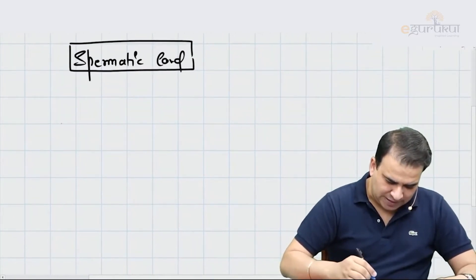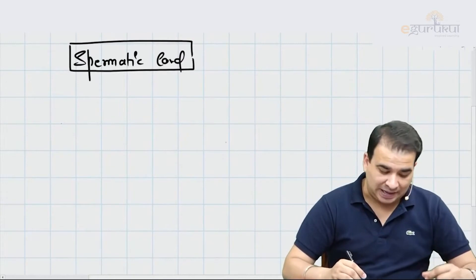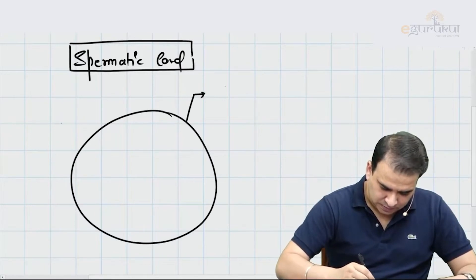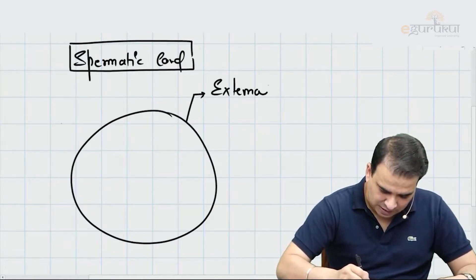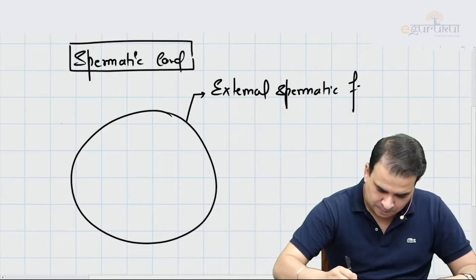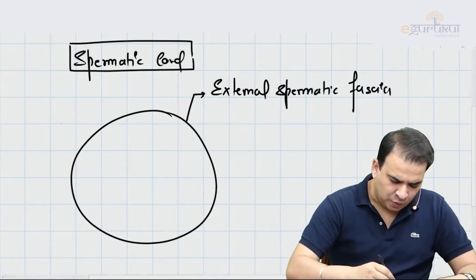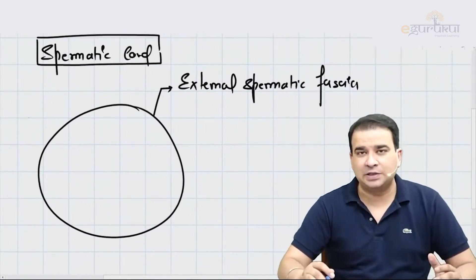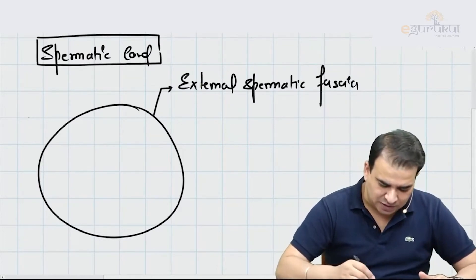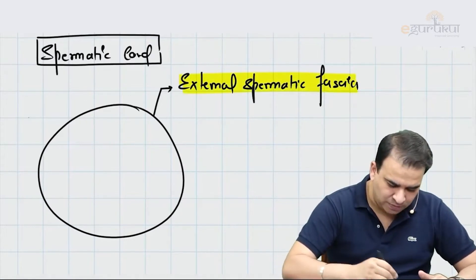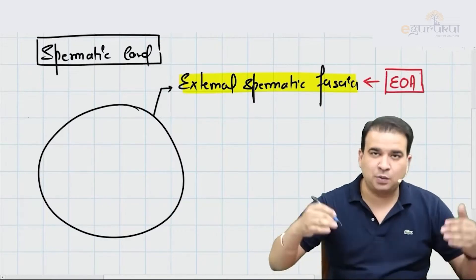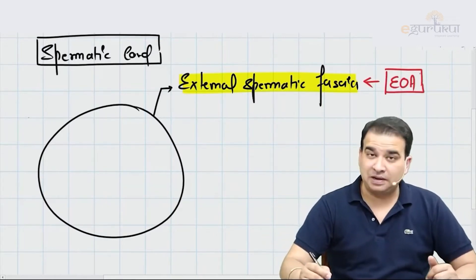Starting from outside to inside, the outermost layer is called the external spermatic fascia. What is important to know in the spermatic cord — and even in the layers of the scrotum — is where these layers are continuing from. The external spermatic fascia is actually the continuation from the external oblique aponeurosis. So the external oblique aponeurosis is the one which extends down and forms this external spermatic fascia.